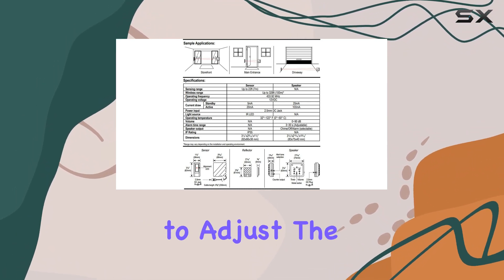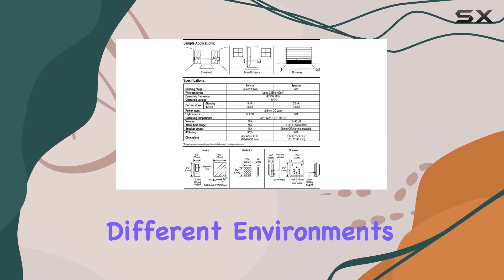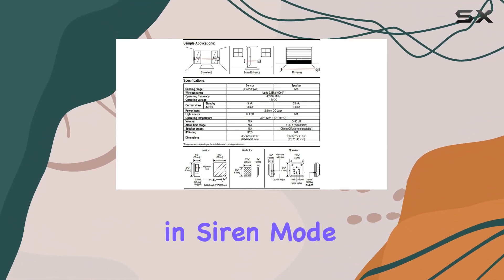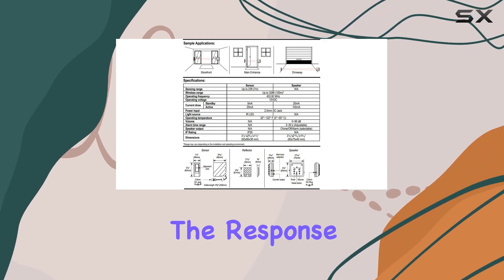You have the flexibility to adjust the speaker volume or even mute it if needed, accommodating different environments and preferences. For added convenience, the alarm duration in siren mode is adjustable from 3 to 30 seconds, allowing you to customize the response time.